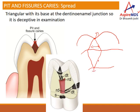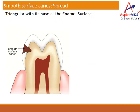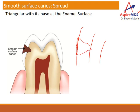In smooth surface caries, if this is enamel and this is dentine, the caries will start in a wider manner on the surface and as it goes towards dentine the area will become narrow. Then again when it reaches dentine it will spread at the DEJ, and then again it will start becoming narrow as it reaches the pulp. So here the triangle direction is the same for both enamel as well as dentinal caries.